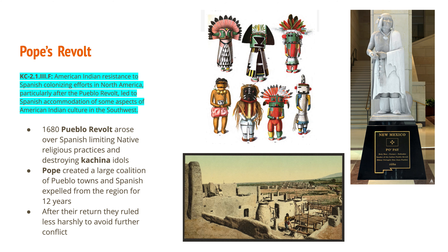Moving on to Pope's Revolt: American Indian resistance to Spanish colonizing efforts in North America, particularly after the Pueblo Revolt, led to Spanish accommodation of some aspects of American Indian culture in the southwest. In 1680, the revolt was led by Pope, a Pueblo Indian — also called the Pueblo Revolt. The Spanish had been limiting Native religious practices and destroying kachina dolls, trying to force conversion to Christianity. Pope created a large coalition of Pueblo towns across 200 miles, burned down Spanish settlements, and expelled the Spanish for about 12 years. When the Spanish returned, they ruled less harshly and accommodated the religious practices of the Pueblo people in northern New Mexico.